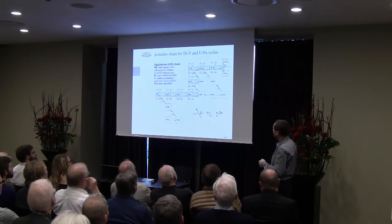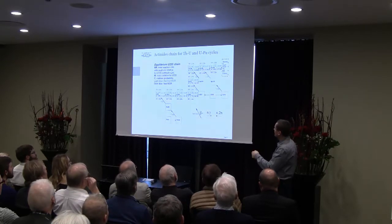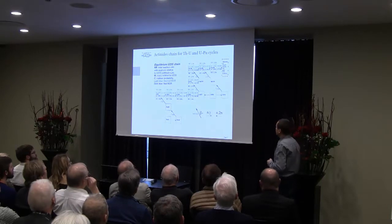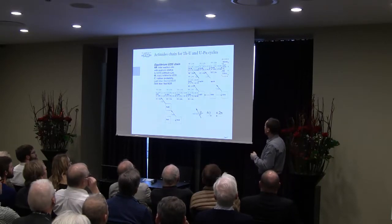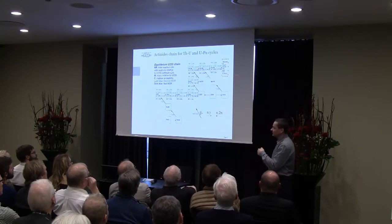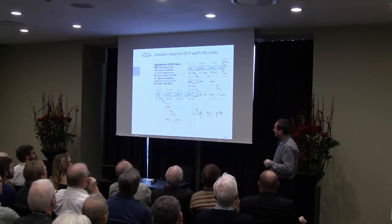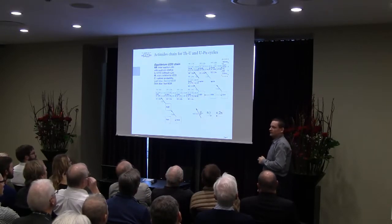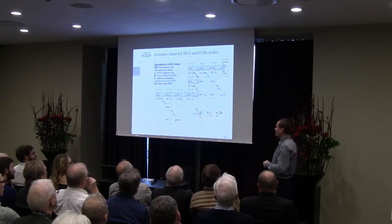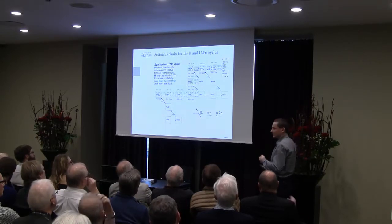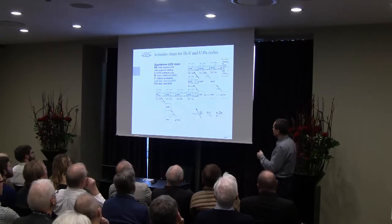If you compare it with the uranium-plutonium cycle, you start at uranium-238 and immediately produce plutonium. It's necessary to say that americium, curium, and the plutonium isotopes are long-lived radioactive waste. On the other hand, the uranium isotopes from the thorium cycle are also radioactive and will be present as traces or reprocessing losses in the waste, but they will still be better from the long-term perspective.